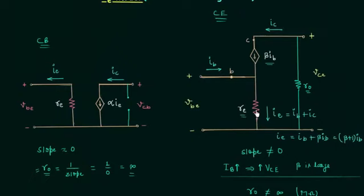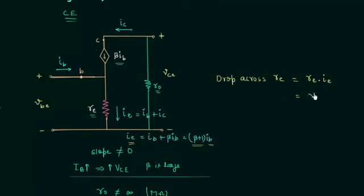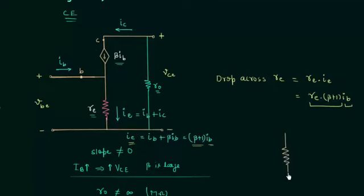Now we will find the drop across resistance RE. The drop equals resistance RE multiplied by the current IE, and IE equals beta plus 1 times the base current IB. So the drop across RE is equal to RE times beta plus 1 times IB. To separate the input circuit and the output circuit, we take RE and beta plus 1 together, so IB is the current flowing through the resistance beta plus 1 RE. This gives a resistance equal to beta plus 1 times RE, with IB as the flowing current.